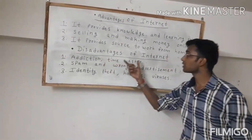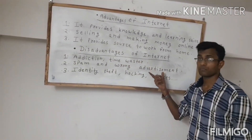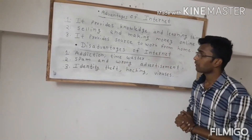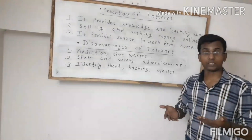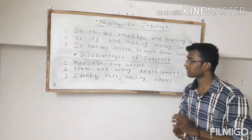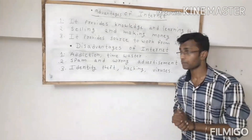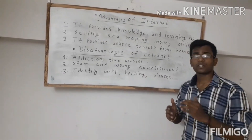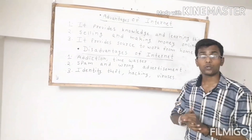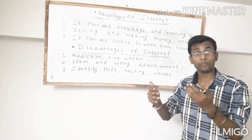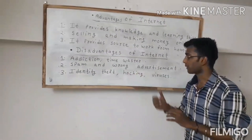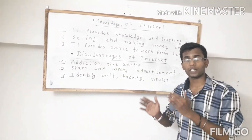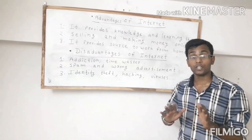Disadvantages of Internet. First: addiction and time wasted. Second: spam and wrong advertisement. Spam ka matlab hai, kisi bhi tarah ka aapattijanak koi message kisi ko bhejna ya phir aapko kisi ke dwara milna. Or wrong advertisement — yaad rakhiye, internet mein koi bhi jo advertisement aapko mil raha hai, zaruri nahi ki woh job se related ho ya kisi bhi cheez se — zaruri nahi ki woh sahi hai.